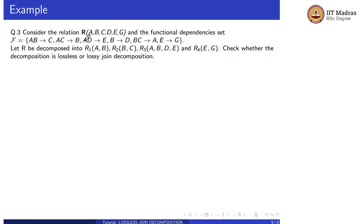Consider the same relation R with attributes A, B, C, D, E, G and the same functional dependency set. Let R be decomposed into R1 = AB, R2 = BC, R3 = ABDE, and R4 = EG. Check whether the decomposition is lossless or lossy joint decomposition.